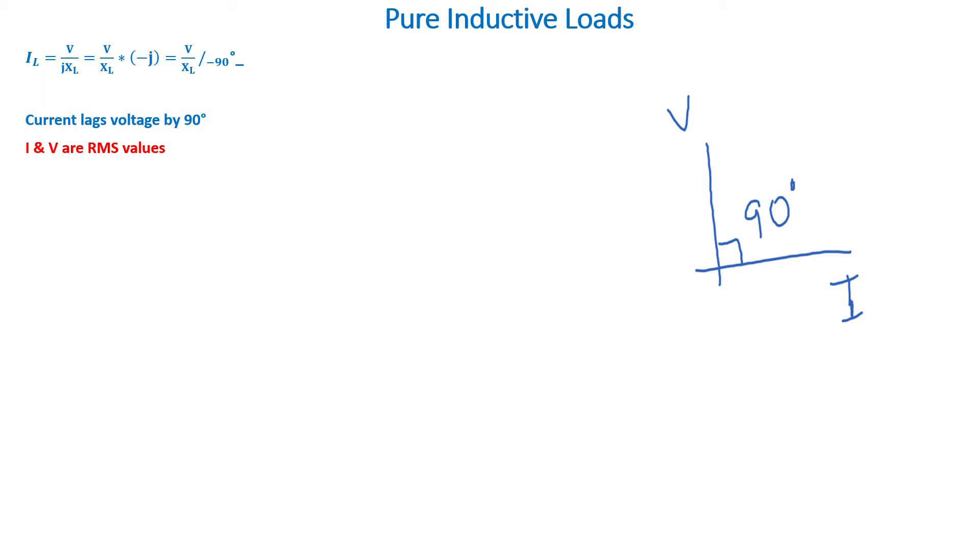The voltage and current values are RMS values since we're talking AC circuit. Now the average power absorbed by the inductor is zero. The pure inductor consumes zero power.